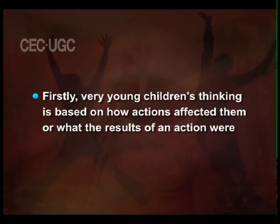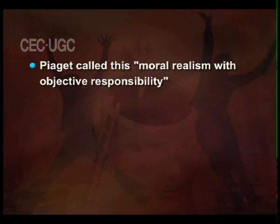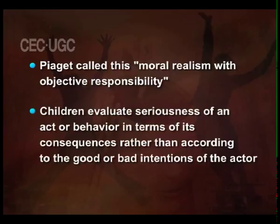Piaget asked children which character deserved to be punished the most, and tried to find out not just their answers but the reasoning they used to arrive at them. Piaget found two main differences in how children thought about moral behaviour. Very young children's thinking is based on how actions affected them or the results of an action. For example, young children say breaking ten cups is worse than breaking one. They also recognise the sanctity of rules. Piaget called this moral realism with objective responsibility — children evaluate the seriousness of an act in terms of its consequences rather than the good or bad intentions of the actor.